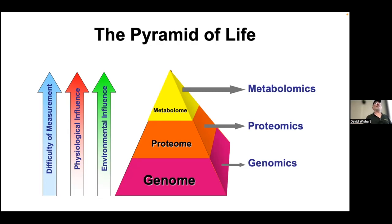As you climb up the pyramid, there are different levels of influence. The genome is not typically affected by the environment — it's very stable. We can dig up DNA from mammoths and Neanderthals and it's still largely the same after hundreds of thousands of years. On the other hand, if you're drinking coffee or having breakfast, your metabolome is changing even as I speak — it's influenced by what you eat, breathe, and drink. Your genome is identical whether it's a cell in your stomach, eye, muscle, or skin, but the metabolome in your brain, skin, and muscle is completely different. The metabolome is exquisitely sensitive to physiology.